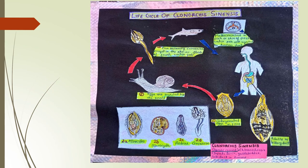A poster made by a student beautifully illustrates the life cycle of Clonorchis sinensis using diagrams. It shows the different larval forms present in the snail, the metacercaria stage present in the fish, the adult worm residing in the bile duct of man, and the embryonated egg.